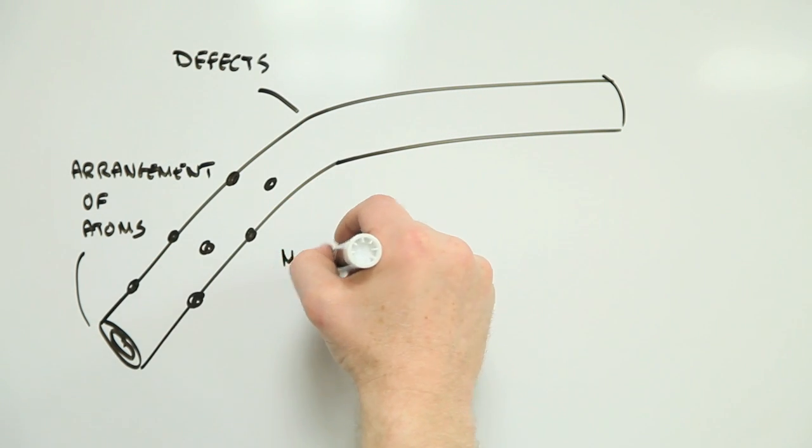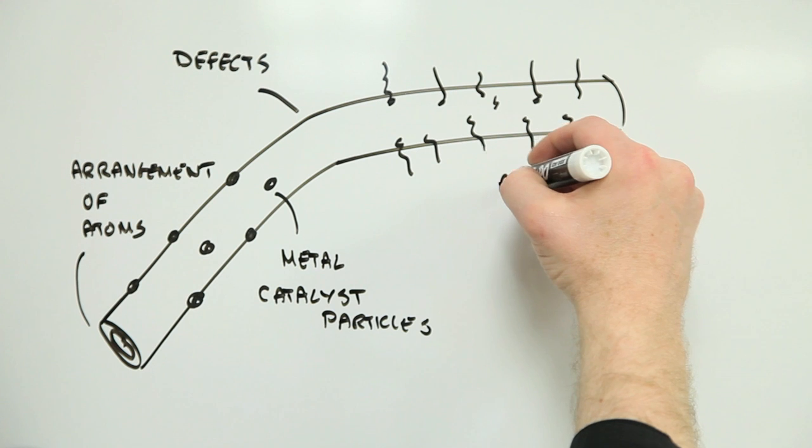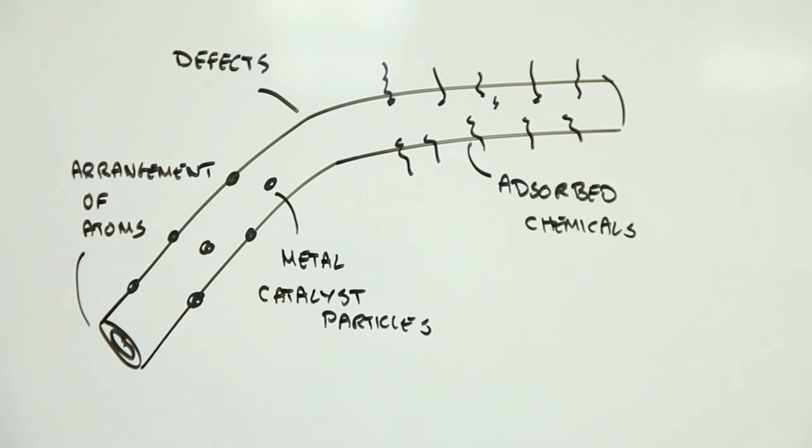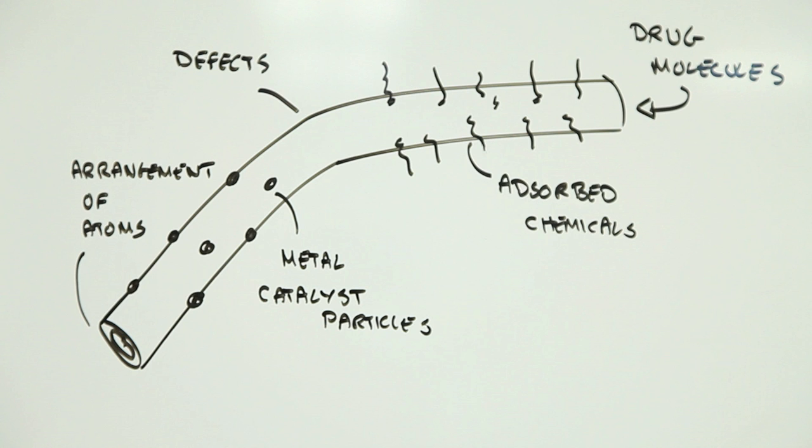These might be metal nanoparticles used in their production, or chemicals added to their surface to make them easier to work with, or even drug molecules inserted into their core to create more effective therapeutics. In all cases, the specific chemistry of a given carbon nanotube is rather important.